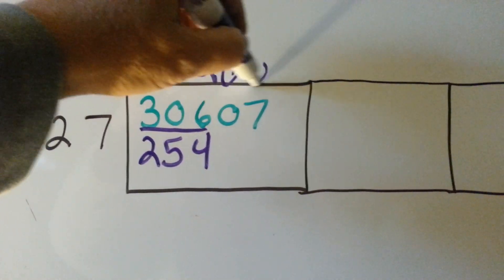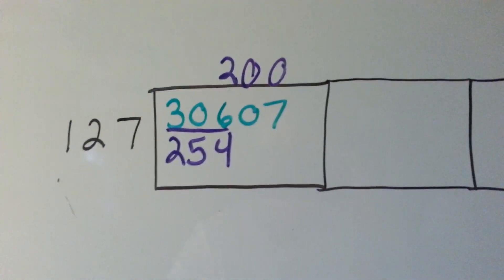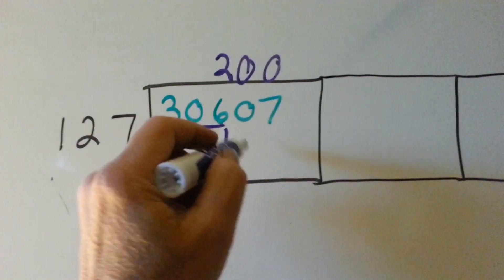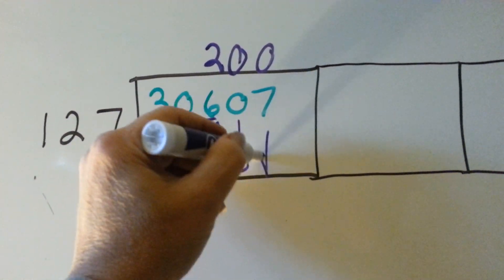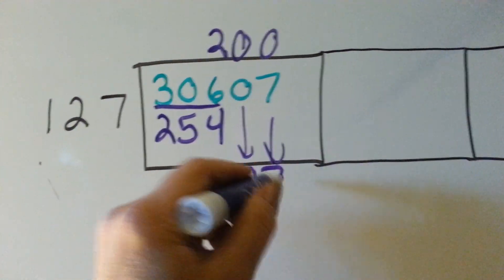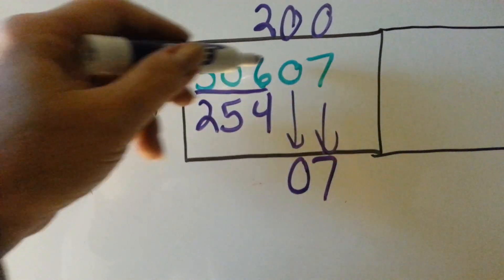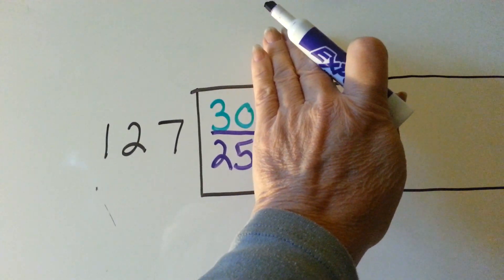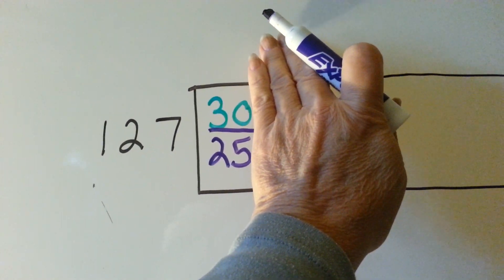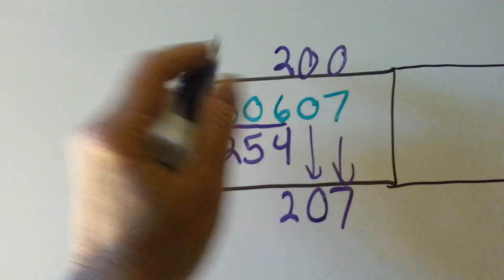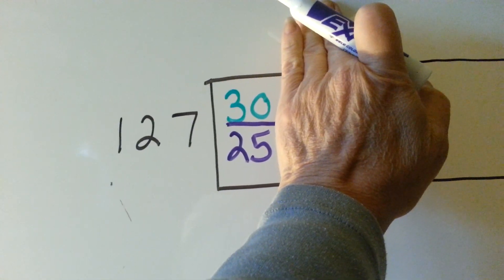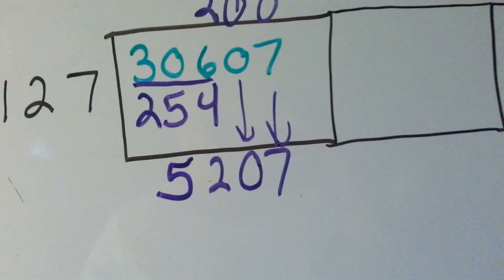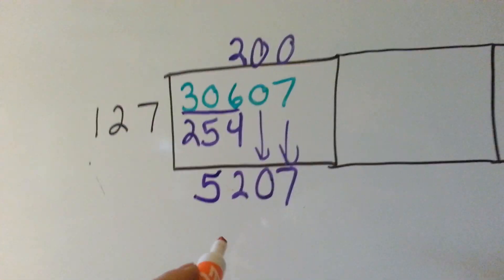Now we're going to fill in zeros here because these spaces are done. Then it's the next digit's turn to come down, and we get to subtract: 6 take away 4 is 2. Then 30 take away 25 — we can just say 30 take away 25 is 5, rather than borrowing from the 3. So now we have a remainder of 52.